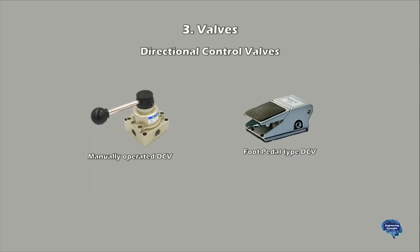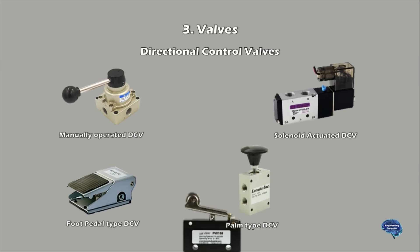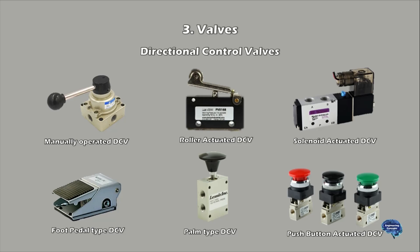Valves are used to control the flow direction of compressed air. A valve is a device that regulates, directs, or controls the flow of a fluid by opening, closing, or partially obstructing various passageways. In an open valve, fluid flows from higher pressure to lower pressure. A check valve is a freely hinged flap that drops to obstruct fluid flow in one direction but is pushed open by flow in the opposite direction, preventing or checking flow in one direction.